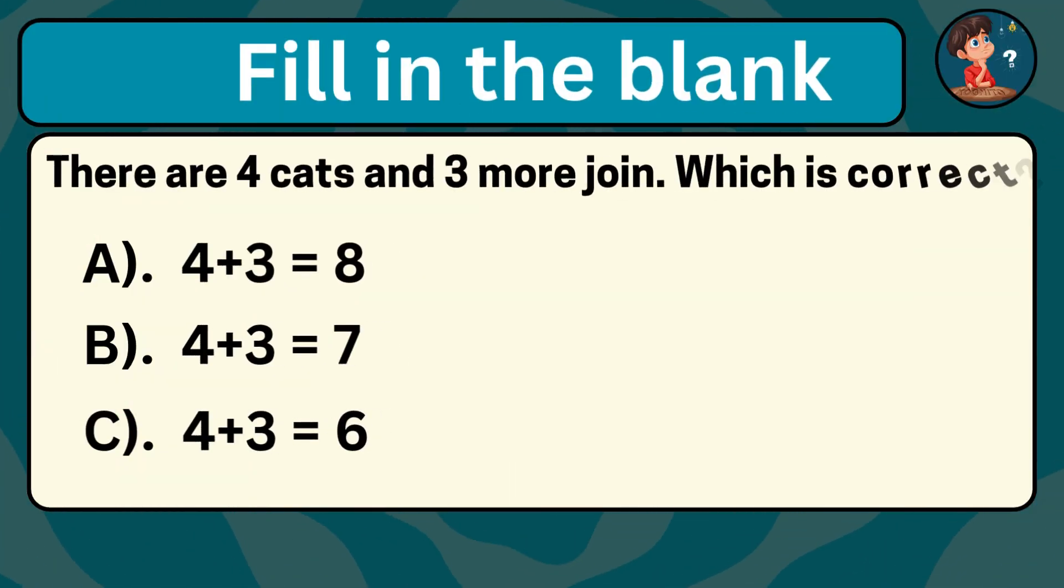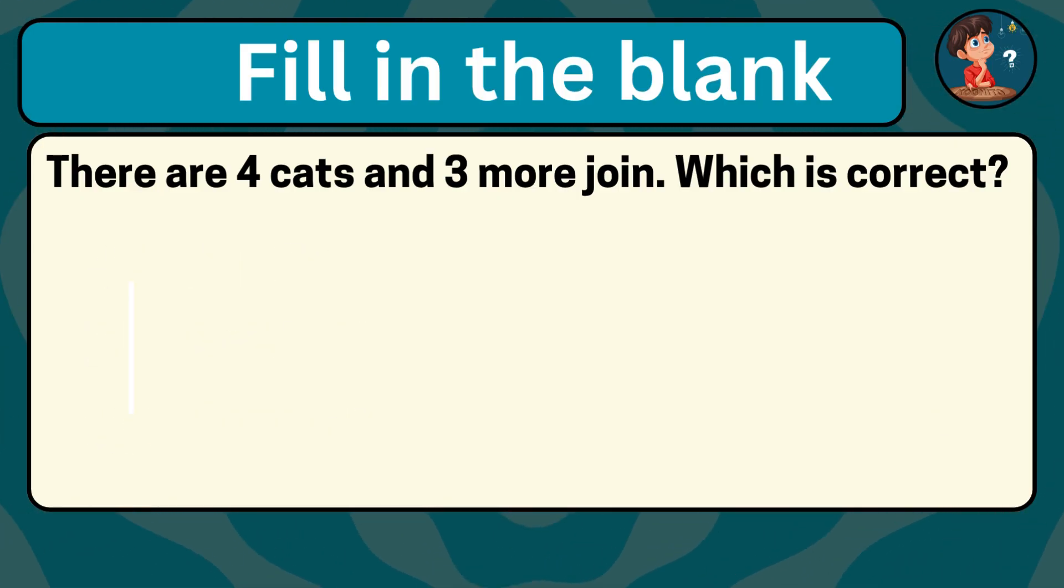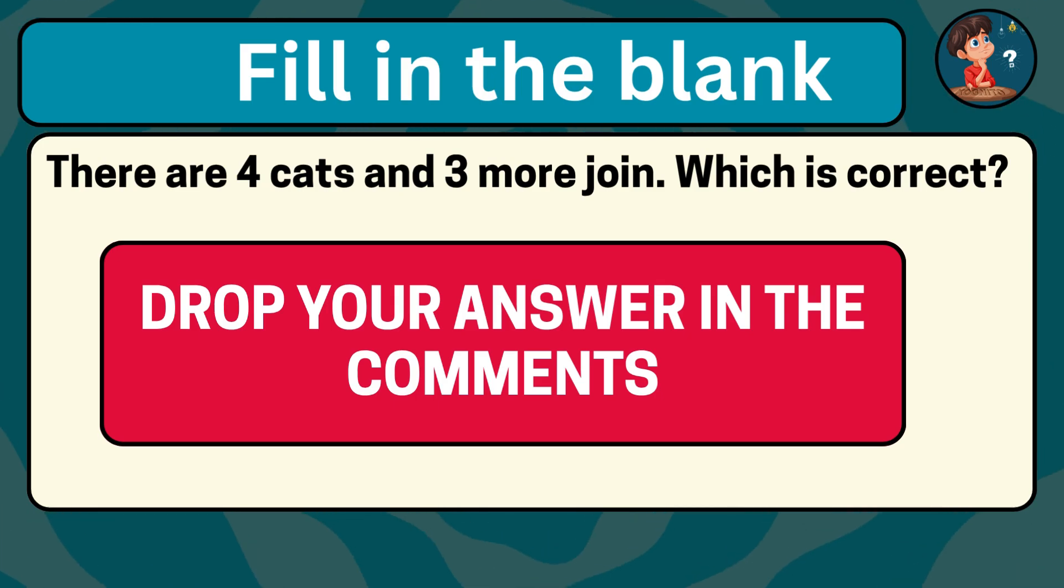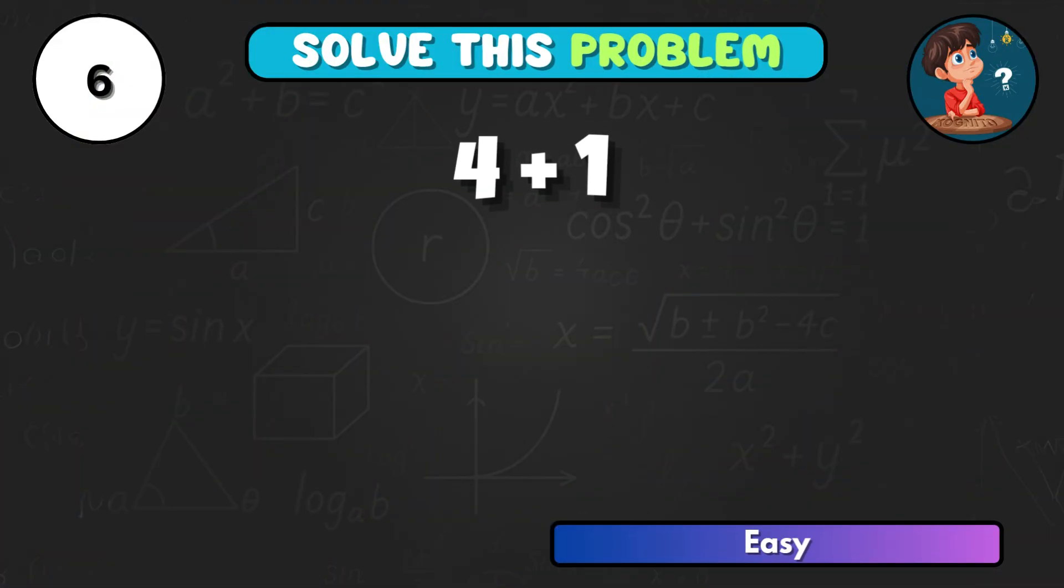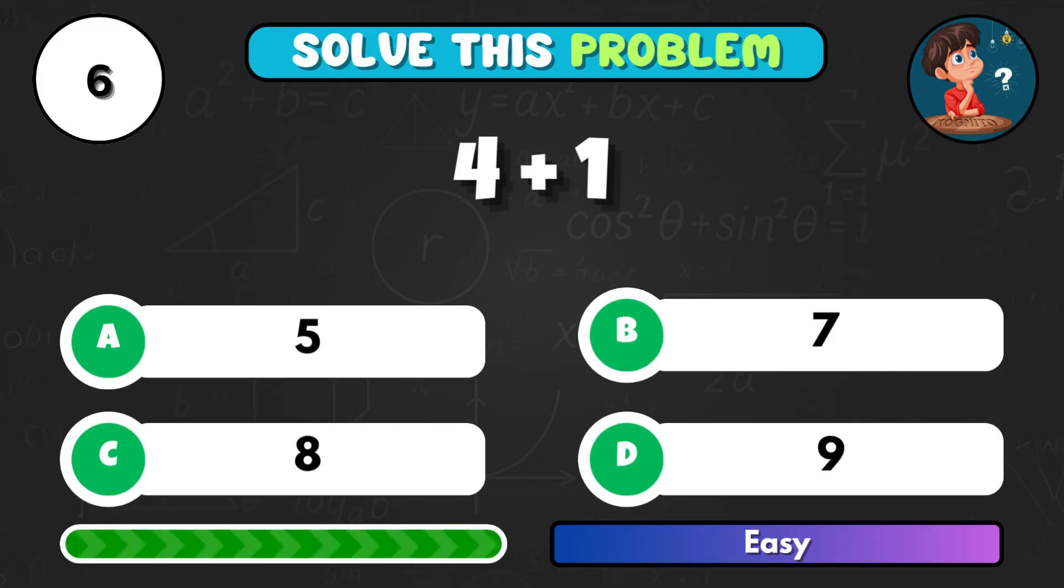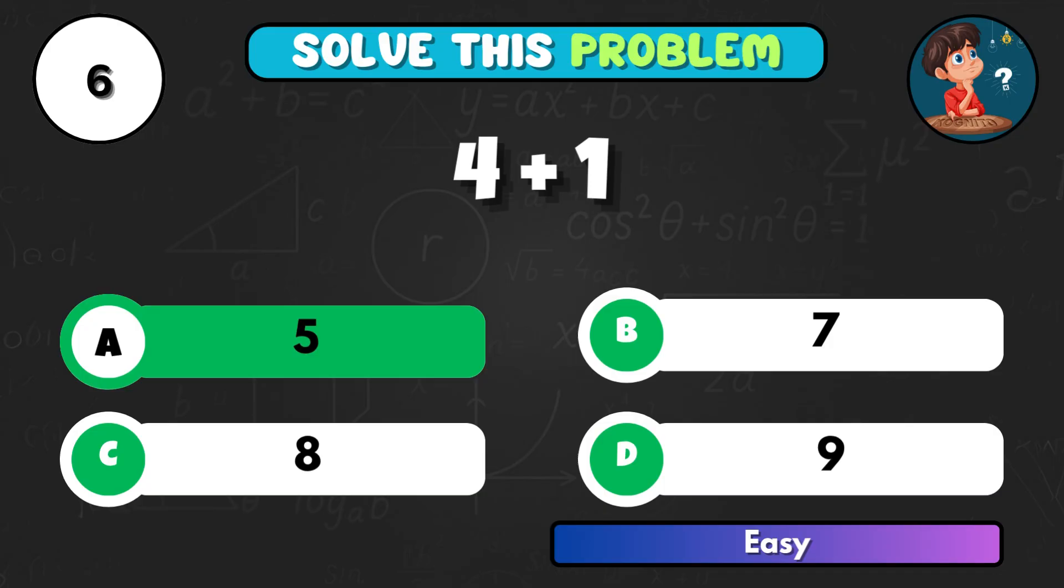There are 4 cats and then 3 more come to join them. How many cats are there altogether? Add 4 and 1 together, what do you get? Option A equal to 5.